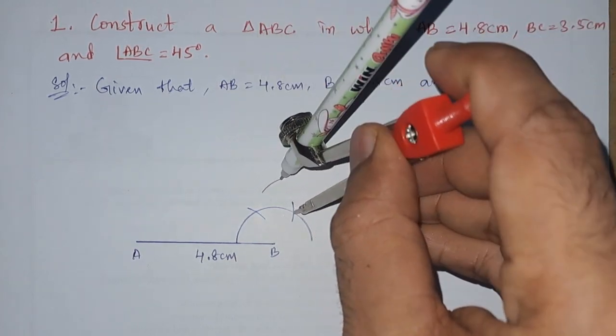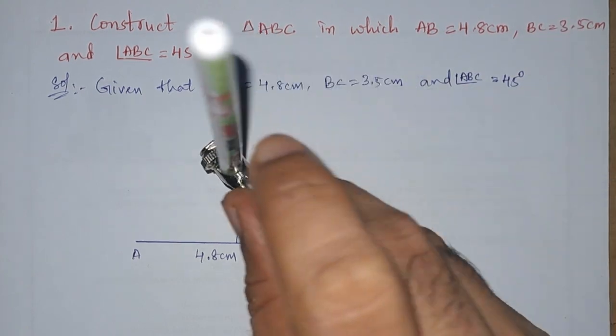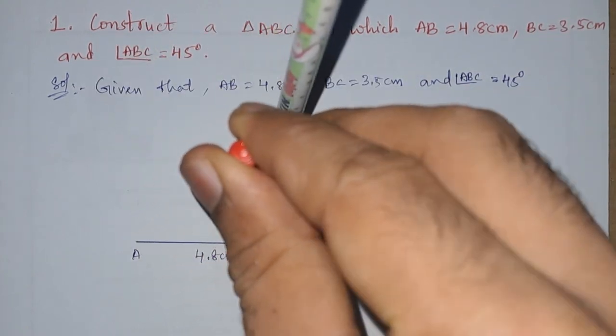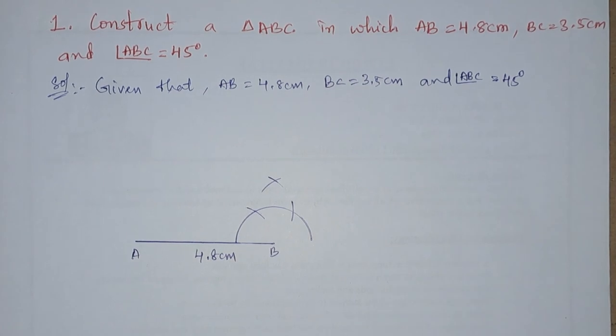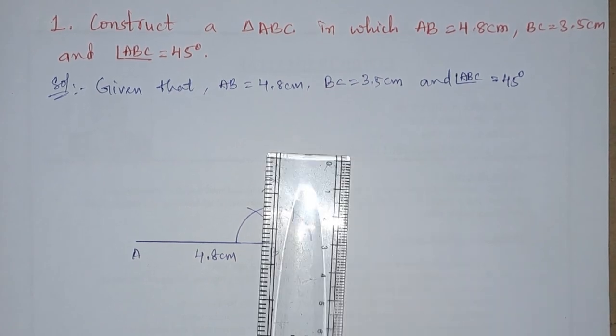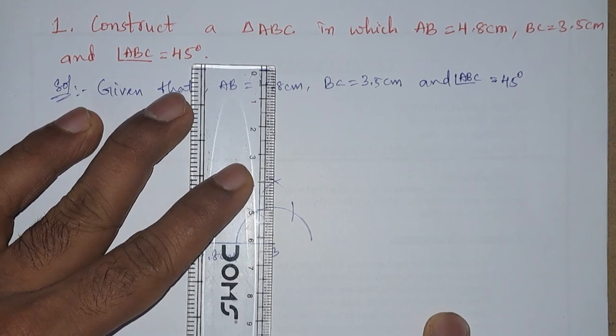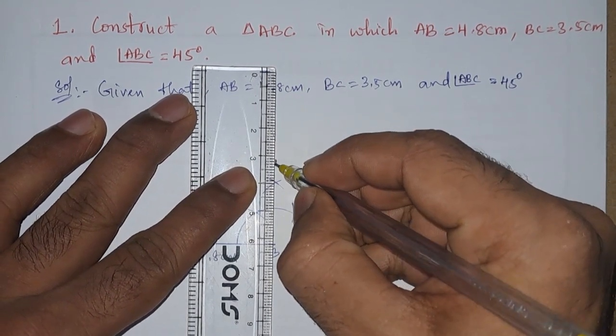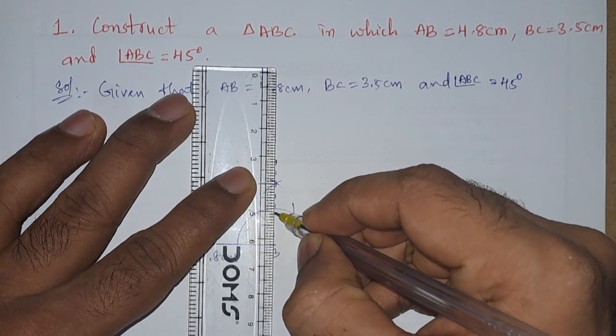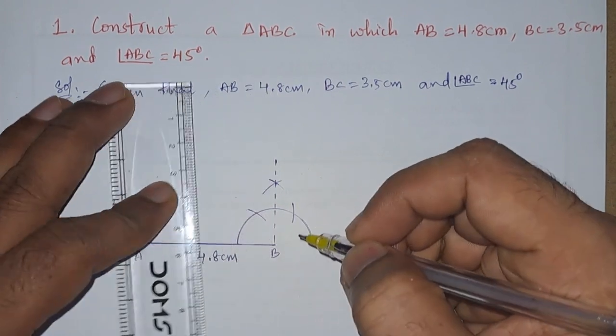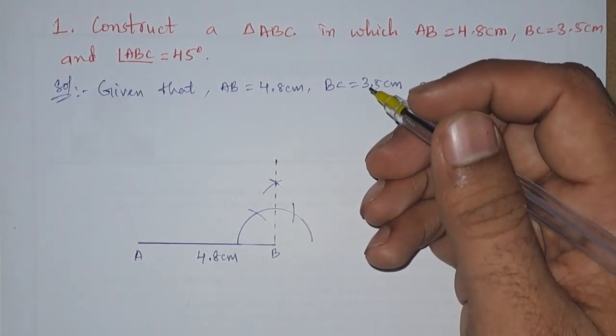Now we will draw another two arcs from these two points so that we will now join these two points - point B and this point. So let us put dotted line because we just need 45 degrees. Here we are getting 90 degrees.